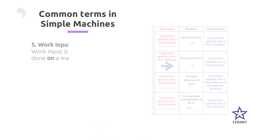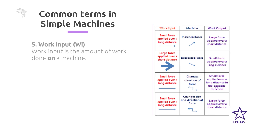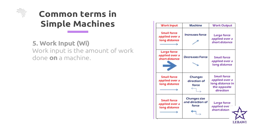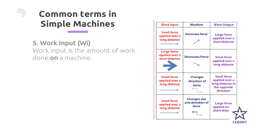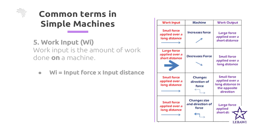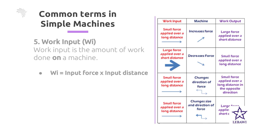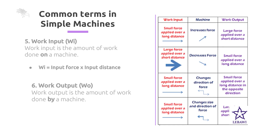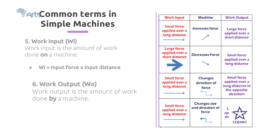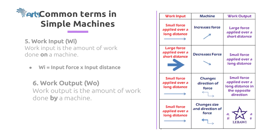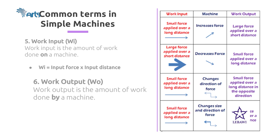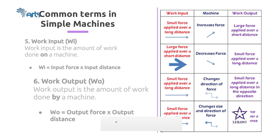Work input is the amount of work done on a machine, calculated by multiplying input force by input distance. Work output is the amount of work done by a machine, calculated by multiplying output force by output distance.